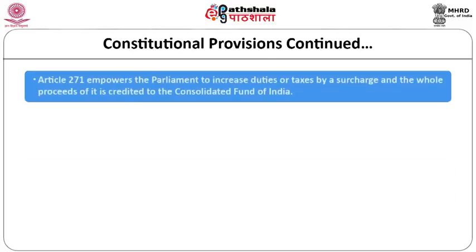Article 271 empowers parliament to increase duties or taxes by a surcharge, and the whole proceeds are credited to the Consolidated Fund of India. Examples include the education cess and Swachh Bharat Cess imposed on income tax or other taxes. Such cess collected by the Government of India is then distributed as per the agreed formula between the union and states.